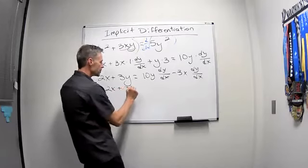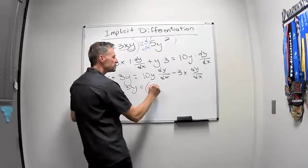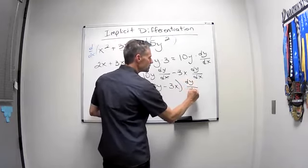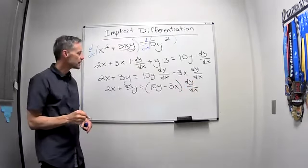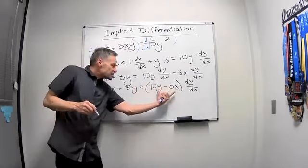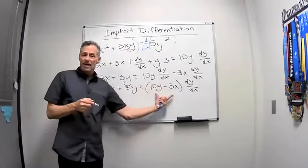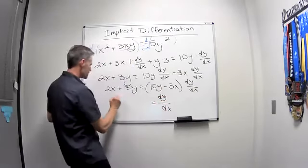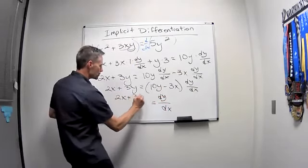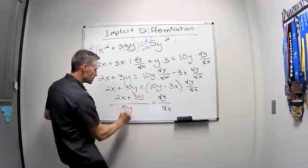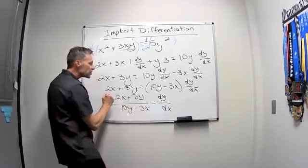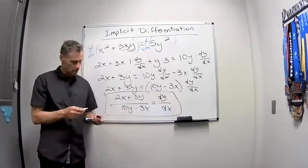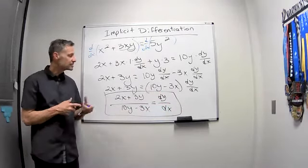But I did that so I can factor out the dy/dx. So I've got 2x plus 3y equals, I like to put it on the outside, on the right-hand side. Of course, you can put it on either side you want to. But now I'm just going to divide both sides by the 10y minus 3x and I'll be done. And if there was a greatest common factor we could factor out of the top and bottom and reduce, we'd have to. But there's not in this case. So we're done.